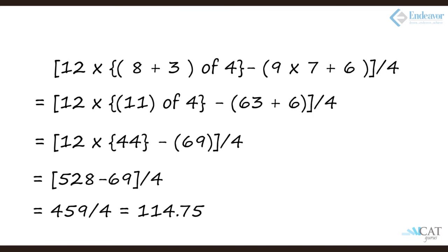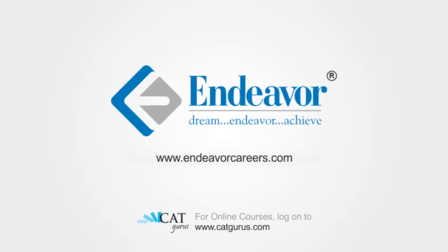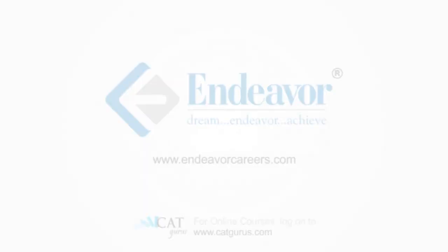Same set of numbers, just by putting brackets, we can see the answer changes from 46.5 to 114.75. This is how we solve BODMAS equations and that is the right way of going ahead in solving bigger problems like these. Thank you.